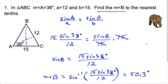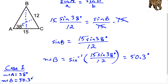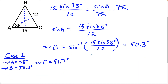But if we stop here we'd be walking into a very dangerous trap. We have to consider the second possibility — that this angle is just a reference angle. We'll separate this into cases. In case one, angle A stays at 38 degrees and angle B is 50.3 degrees. Since a triangle has 180 degrees total, angle C equals 180 minus 38 plus 50.3, which gives us 91.7 degrees.